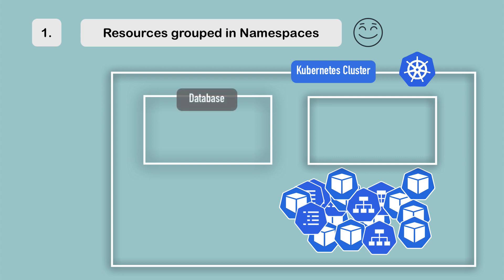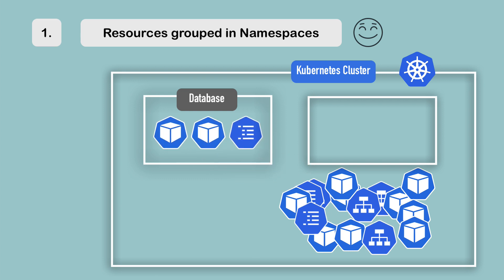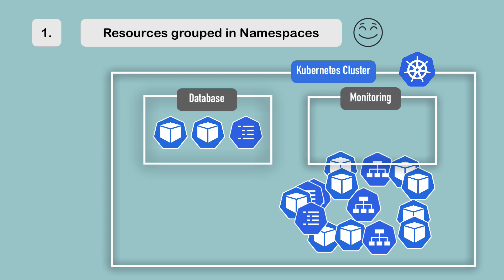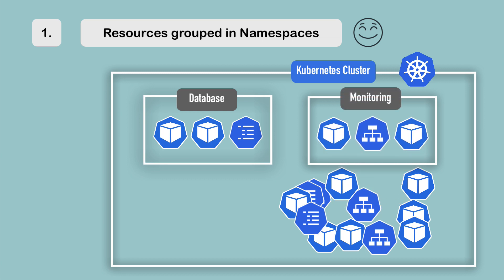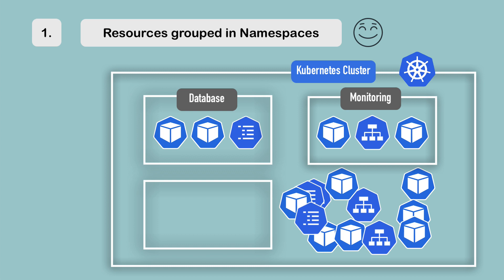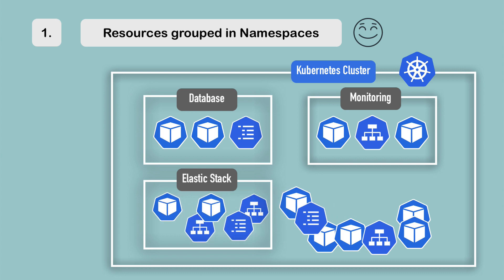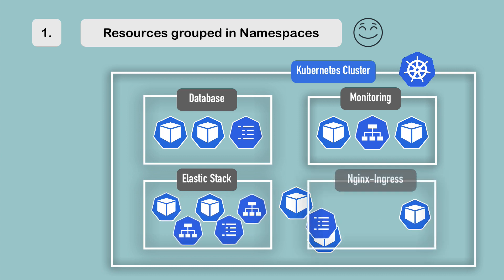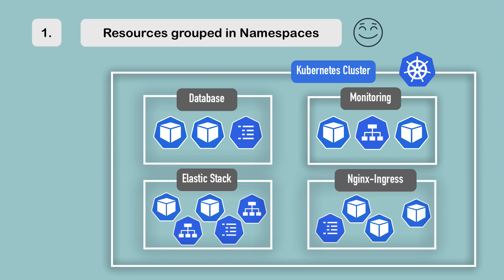A better way is to group resources into namespaces. For example, you can have a database namespace where you deploy your database and all its required resources, a monitoring namespace where you deploy Prometheus and all the stuff it needs, an elastic stack namespace where all the Elasticsearch, Kibana, etc. resources go, and you can have Nginx ingress resources. It's just one way of logically grouping your resources inside the cluster.